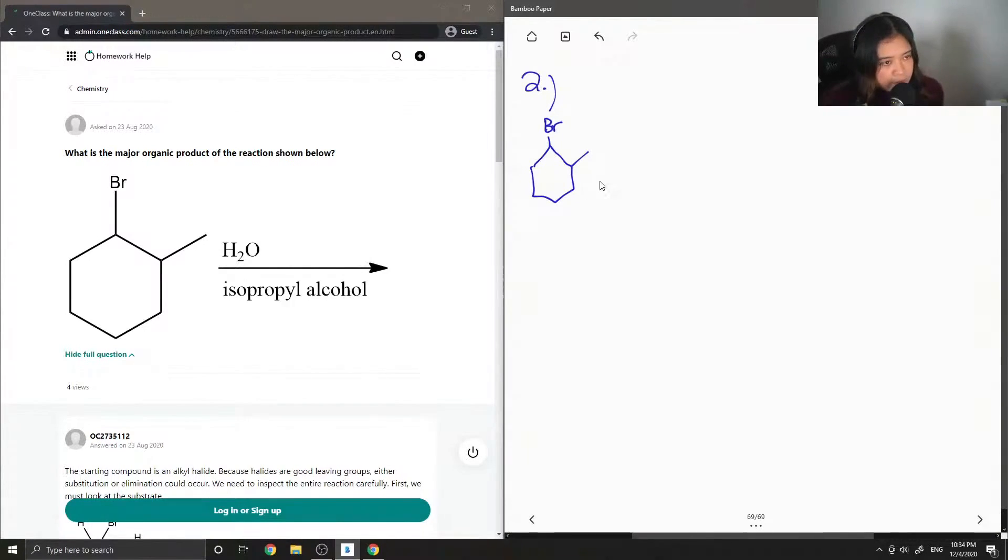Okay, so two different reactions can take place. You can have an SN1 product, so this is through a substitution reaction.